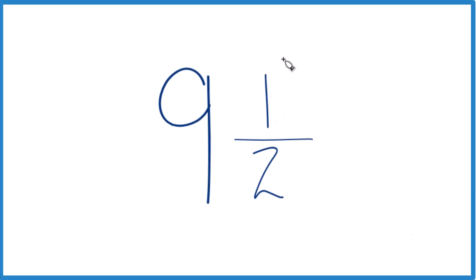Okay, let's write 9 and 1 half, the mixed number 9 and 1 half, as an improper fraction.